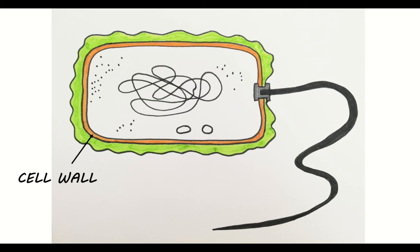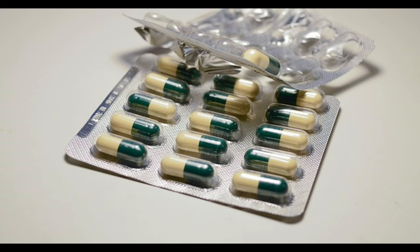Bacteria also have a cell wall. Its function is to provide structural support. But unlike in plant cells, it is made of a macromolecule called murein, not cellulose. Antibiotics often work by damaging bacterial cell walls, so it's important to understand their structure.